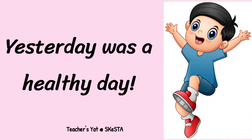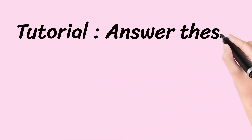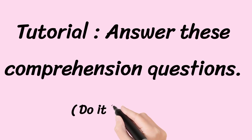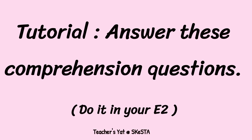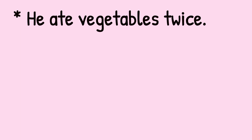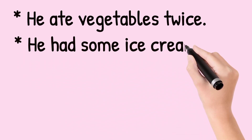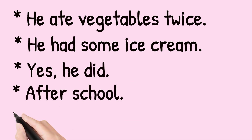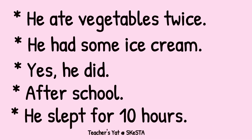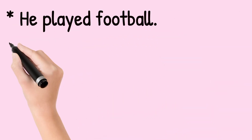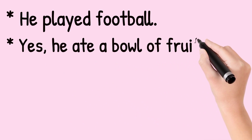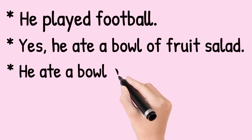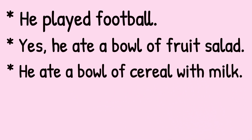That's the end of our lesson. For the tutorial, answer these comprehension questions. Do it in your exercise book. These are some options for your answers: First, he ate vegetables twice. Second, he had some ice cream. Third, yes, he did. Fourth, after school. Five, he slept for 10 hours. Six, he played football. Seven, yes, he ate a bowl of fruit salad. And the last one, he ate a bowl of cereal with milk.